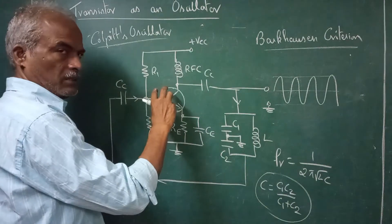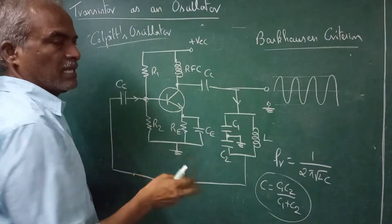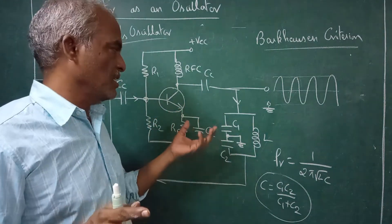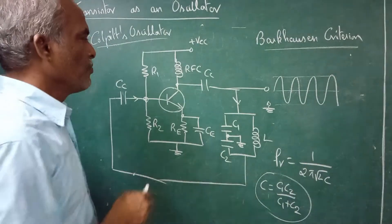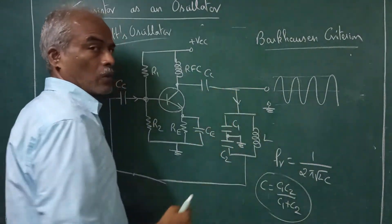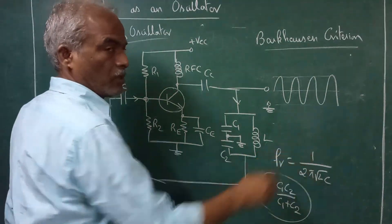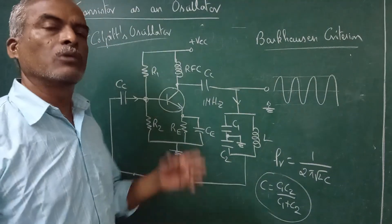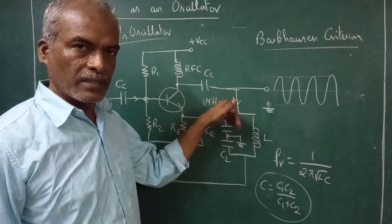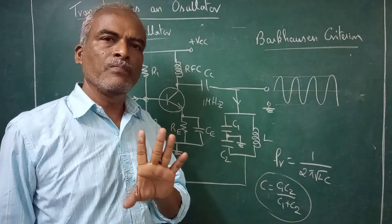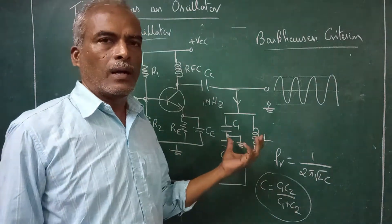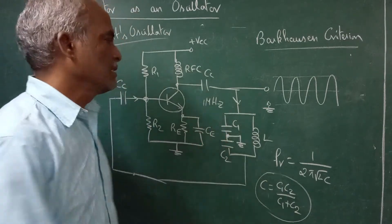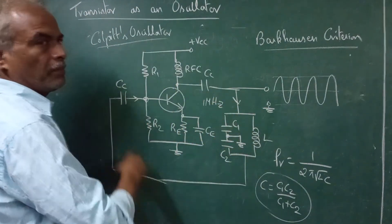The tank circuit is resonant to 1/(2π√LC). Assume this tank circuit is tuned to 1 MHz — the resonant frequency is 1 MHz. All the noise frequencies try to enter this resonant circuit, but the resonant circuit will allow only 1 MHz. Basically it is a parallel resonant circuit — it rejects all other frequencies and they are grounded. So when tuned to 1 MHz, that 1 MHz alone will be repeating in the circuit and you will get only a 1 MHz signal.